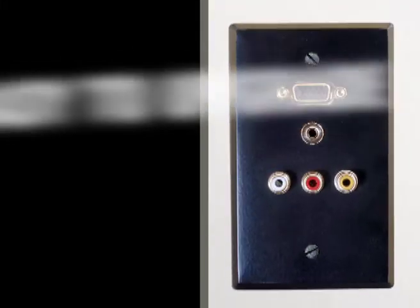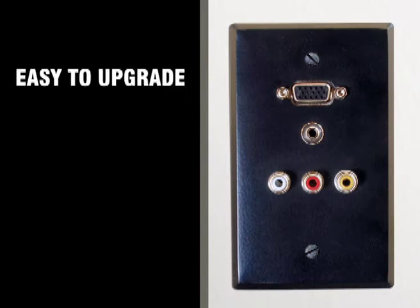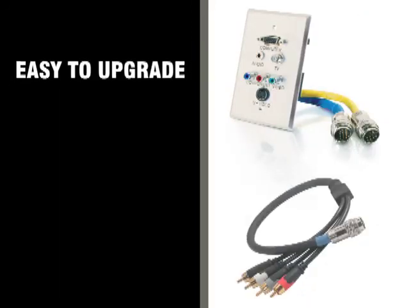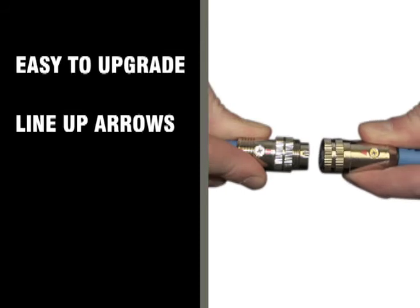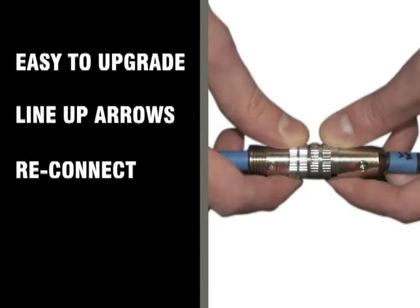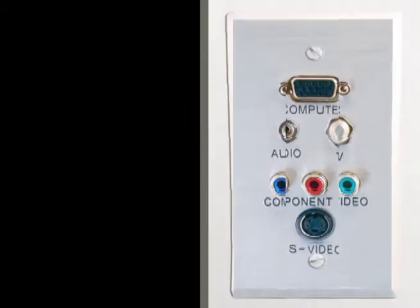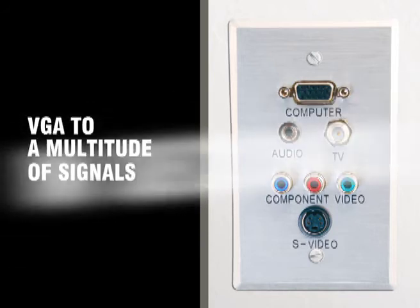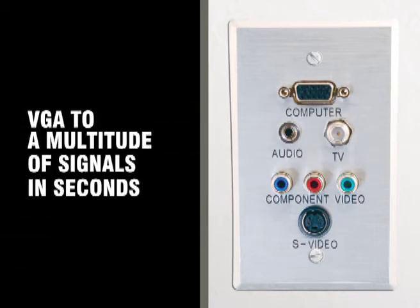When it's time to upgrade, no need to re-pull cables — just change your wall plate or flying lead, line up the arrows, and reconnect your new application. You can quickly go from VGA to a multitude of signals in seconds.